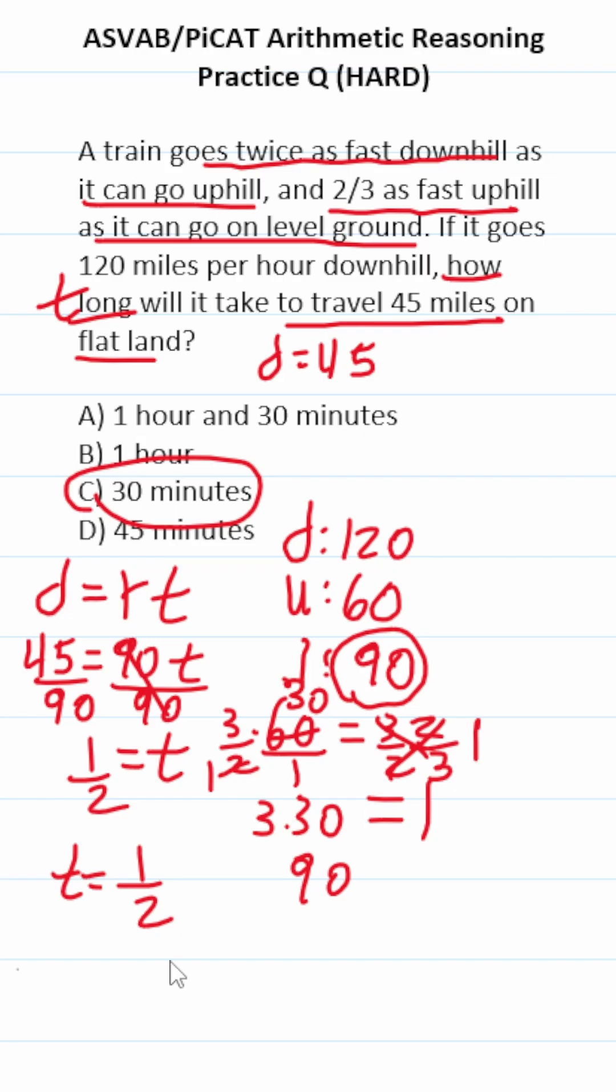There are 60 minutes in an hour. If you didn't know that half an hour equals 30 minutes, you do 60 times one half. Write this as a fraction over 1. This is 60 over 2, which is 30. That's how we got 30 minutes.